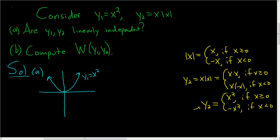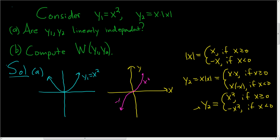Using this information, we can graph y2. There's the y-axis and the x-axis. To graph y2, we'll do it one piece at a time. If x is greater than or equal to 0, it's a parabola, so it looks like this. And if x is less than 0, it's an upside-down parabola, so it looks like this. So this piece is x squared and this piece is negative x squared, and together they form the graph of y2, which equals x times the absolute value of x.